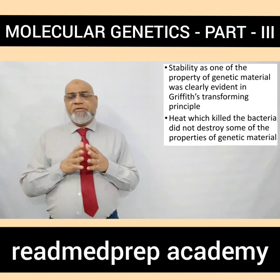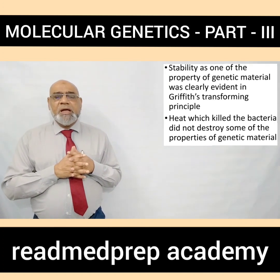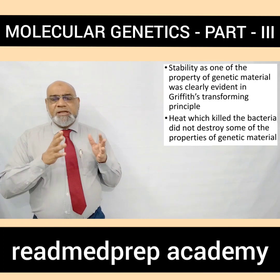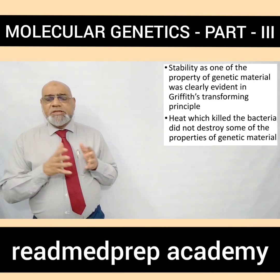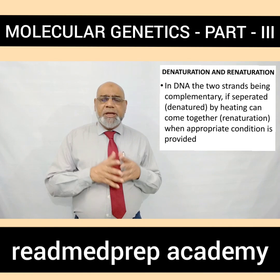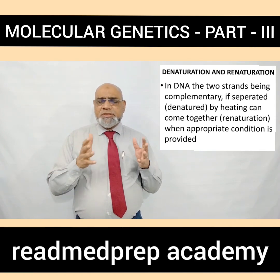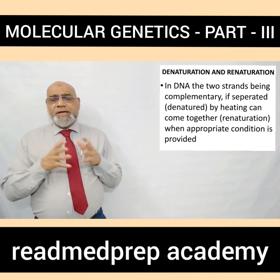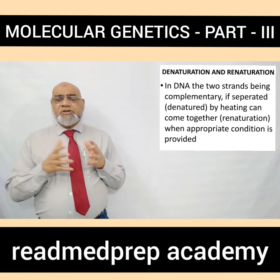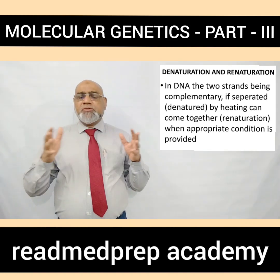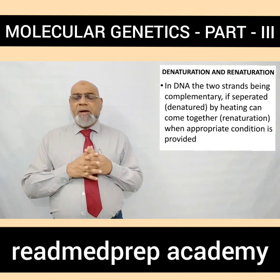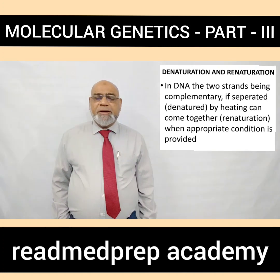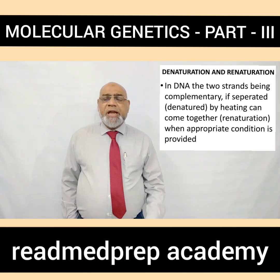This was clearly evident in Griffith's transforming principle experiment with the mouse. Heat which killed the bacteria did not destroy some properties of the genetic material. In DNA, the two complementary strands undergo denaturation on heating — they separate. On cooling, when appropriate conditions are provided, they again wind together in a process called renaturation.